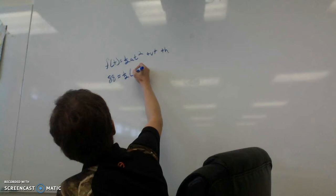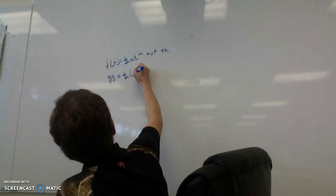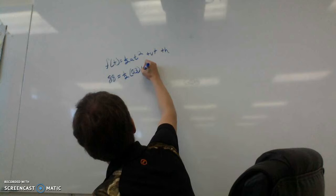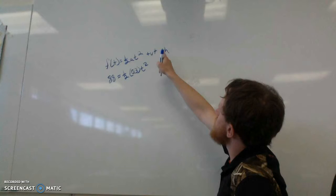88 is going to equal what Sir George does, so we'll put one half his acceleration, 0.3, times t squared. He didn't have a starting velocity and we don't have a starting height or anything.